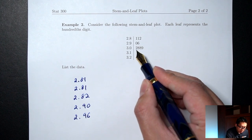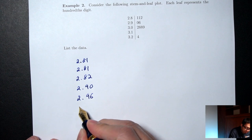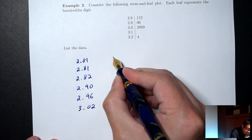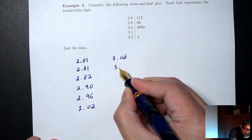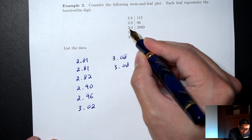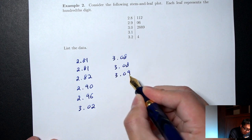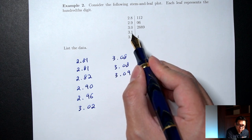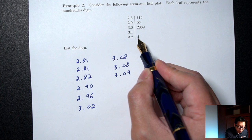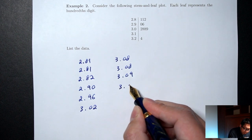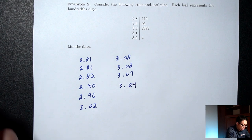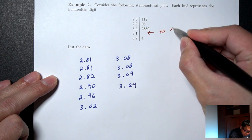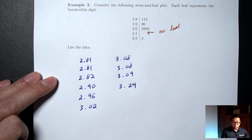Continuing: the stem 2.9 with leaf 0 is 2.90, leaf 6 is 2.96. Then stem 3.0: leaf 2 is 3.02, leaf 8 is 3.08, another 8 is another 3.08, leaf 9 is 3.09. Now if there's no leaf for a stem — say 3.1 has no leaves — that means there's no number that starts with 3.1. So our next number is 3.24.